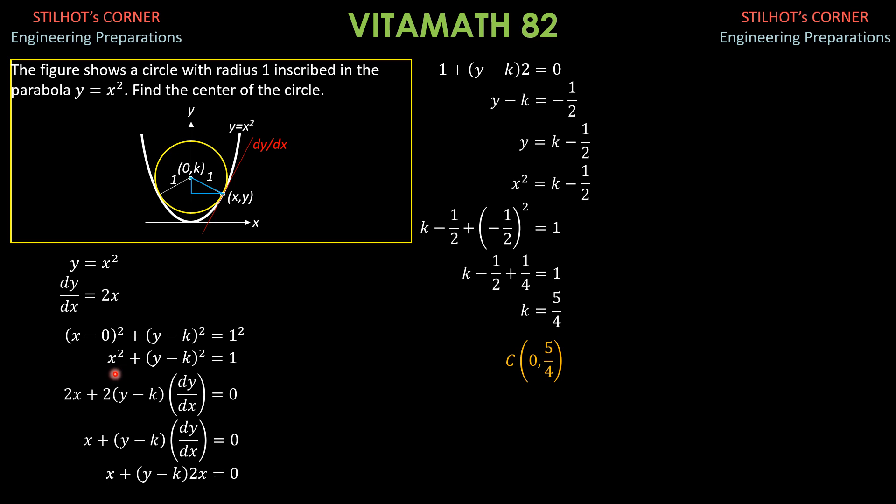By the way, x square is k minus 1 half. So, it's the same. It's the same. So, that's it.